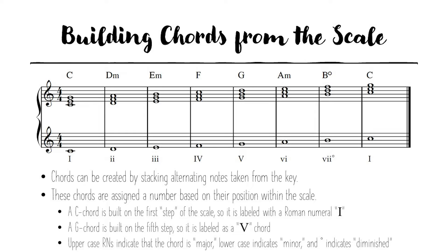These chords are assigned a number based on their position within the scale. A C chord is built on the first step of that scale so it is labeled with a Roman numeral I. The G chord in comparison is built on the fifth step of that scale and so it is labeled with a V. Uppercase Roman numerals indicate that a chord is major sounding and lowercase ones indicate that it is minor sounding. And this degree sign for number seven indicates that it is a diminished chord, but we can cover that more deeply some other time.